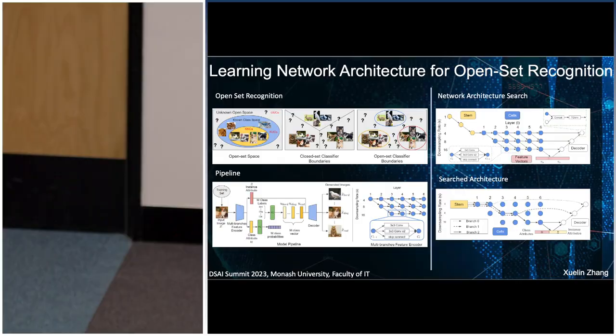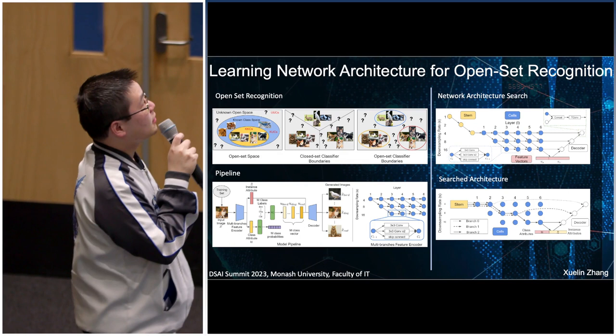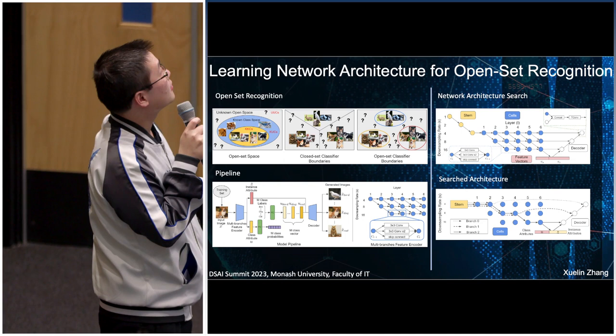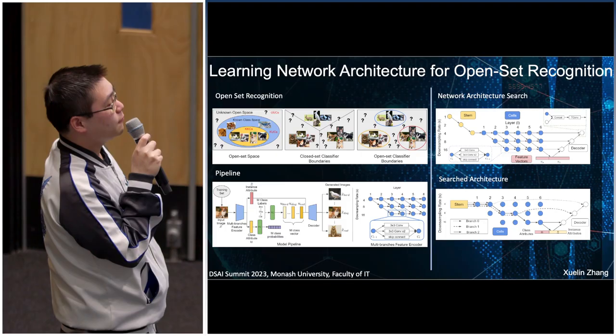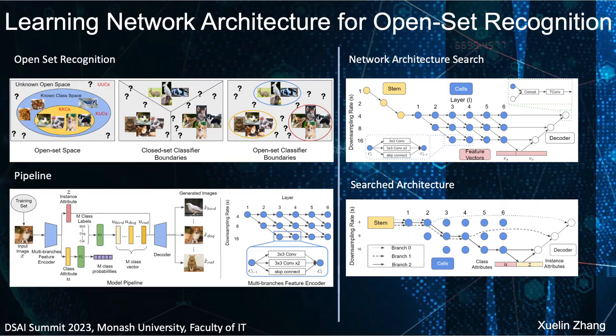Hi everyone, I'm a PhD student of Zhongyuan Guo. Today I'll talk about 'Learning Network Architecture for Open Set Recognition.' In standard deep learning classification, we use a closed-set assumption where the classes at training time and test time are the same.